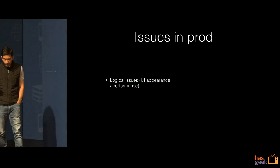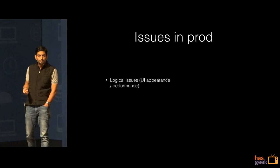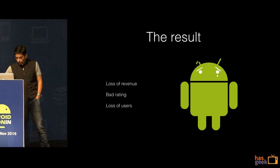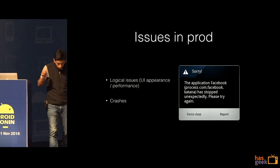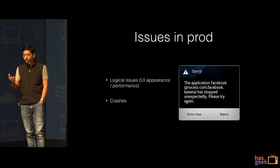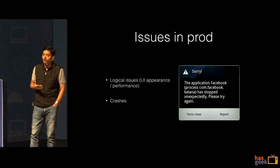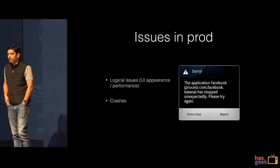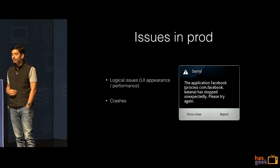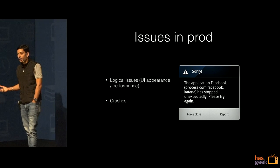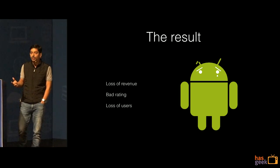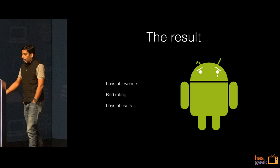You start facing logical issues — the UI doesn't work well, the performance is not good enough. And then the most dreaded thing happens: crashes. Why does it happen? You never provisioned for a newer version of Android that went live a month back, you probably forgot to add some permissions, you didn't provision for your app getting installed on an external SD card, and of course you made some changes in the code which you might want to call features but they are bugs. All this leads to revenue loss, bad ratings, rants on Twitter and Facebook, and loss of users.